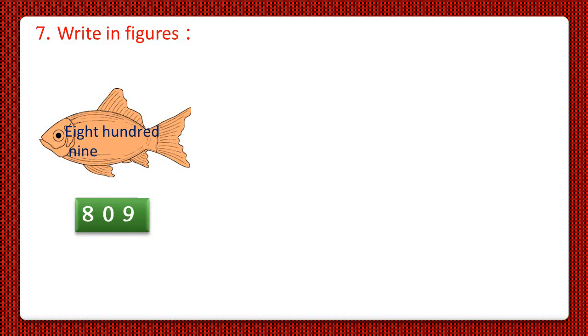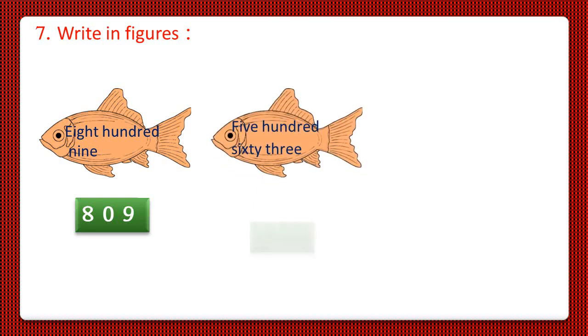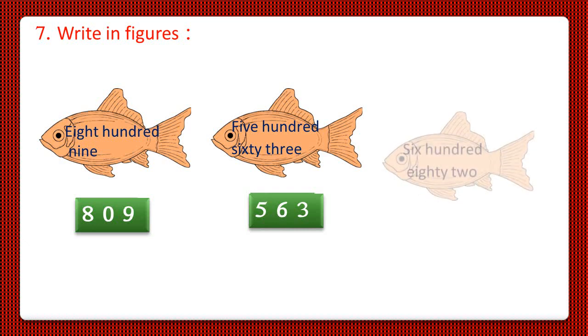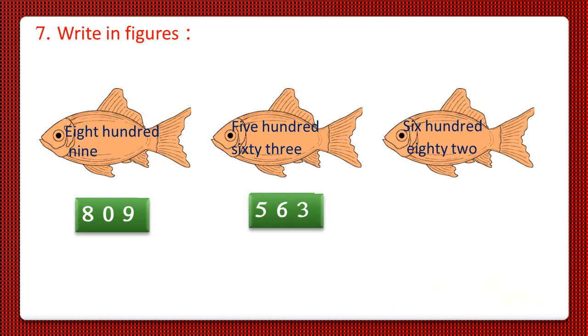The next is 563. For that, let us take the 500 man card and for 63, the 60 man card and 3 man card. So the number becomes 563. The next one, 682, you try to do yourself.